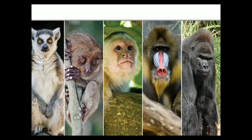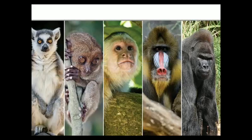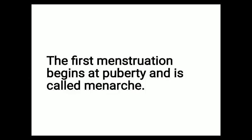Primates include chimpanzees, gorillas - recall the classification of human beings: kingdom Animalia, phylum Vertebrata, class Mammalia, order Primates. This order Primates includes monkeys, apes, and human beings. The reproductive cycle which occurs in the females of primates is known as the menstrual cycle.